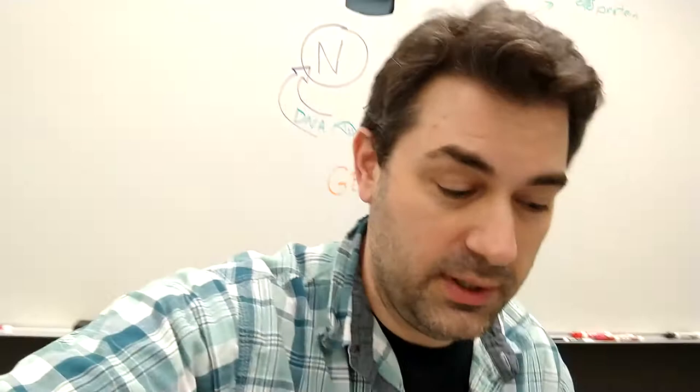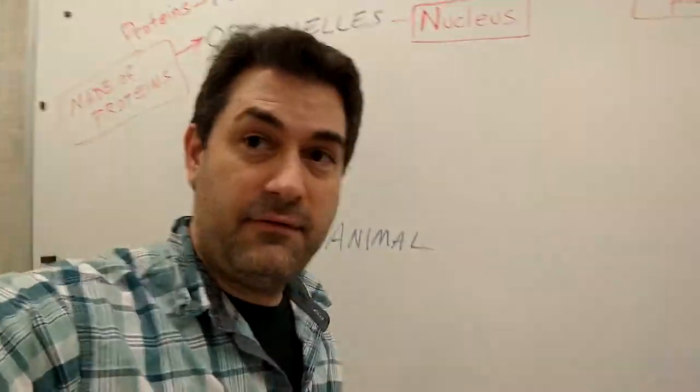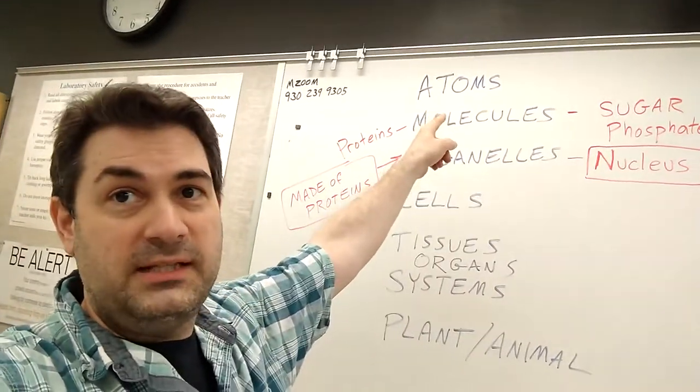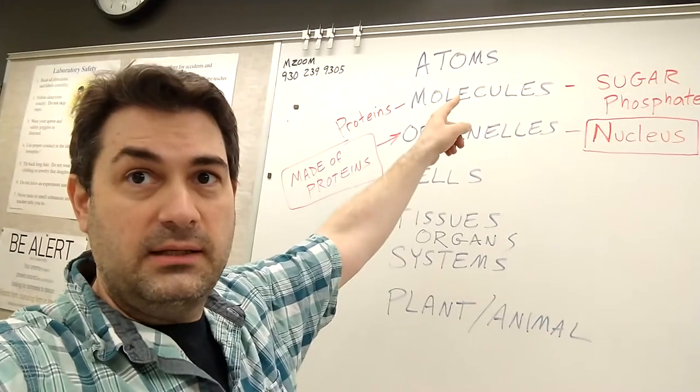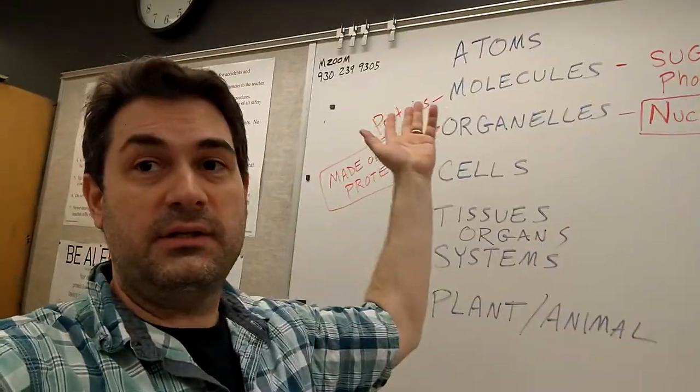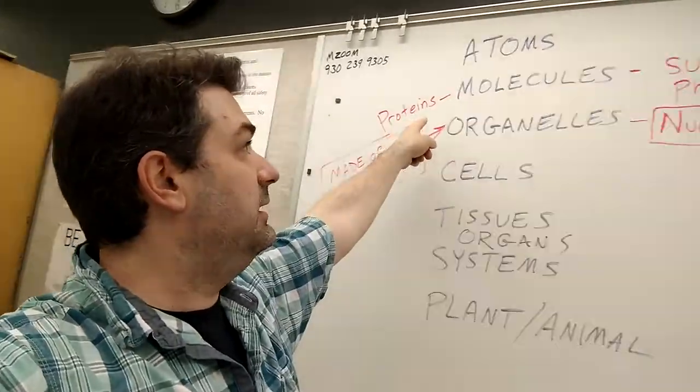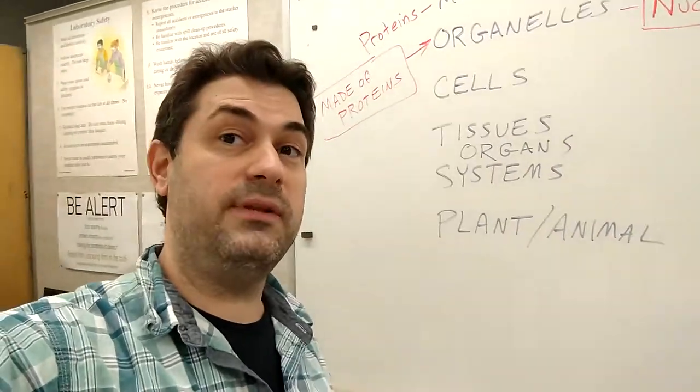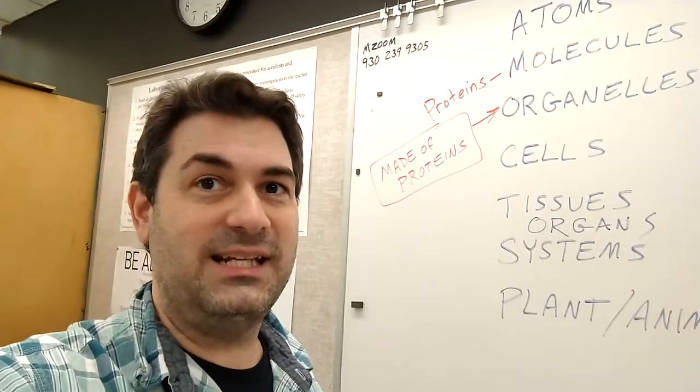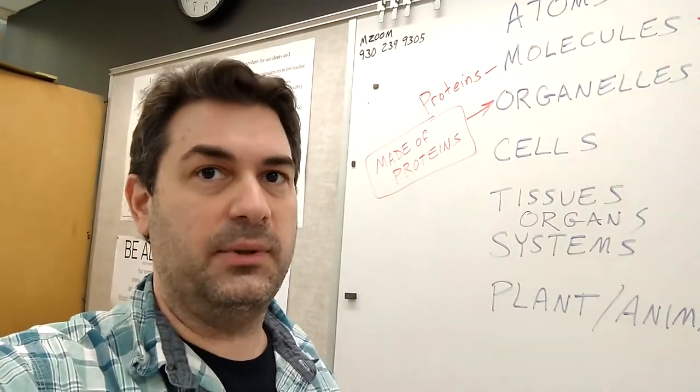Today we are going over a unit on genetics. Let me walk you through what we talked about today. Half of this is review. Atoms are the smallest piece of anything that have the chemical properties of whatever it is. You combine two or more atoms to get molecules, and some of the molecules that are important in life are things like proteins, sugars, phosphates, and bases. You'll know proteins because we talked about those.